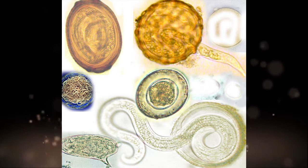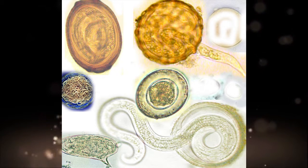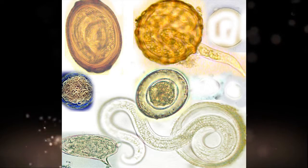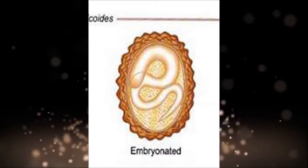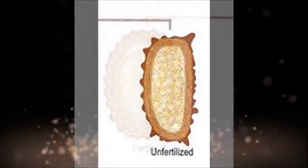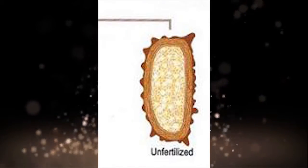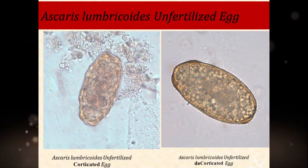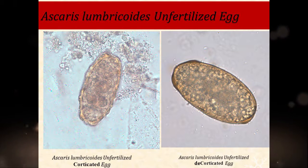Ascaris Lumbricoides eggs: There are three shapes of ova or eggs. There are embryonated eggs, fertilized eggs, and unfertilized eggs. Unfertilized eggs also have two types: corticated eggs and decorticated eggs.